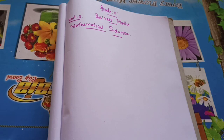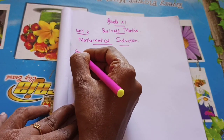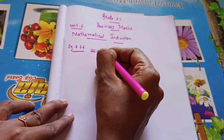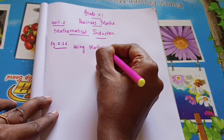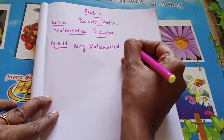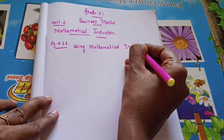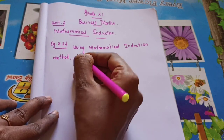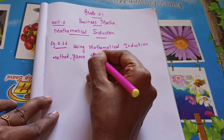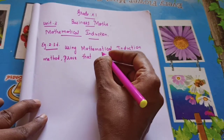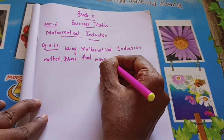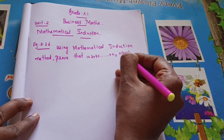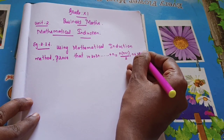Each and every line is important. Learn the principle of mathematical induction from your book. Now let's move to the problem. Example 2.3: Using mathematical induction method, prove that 1 + 2 + 3 + ... + n = n(n+1)/2 for n belonging to N.